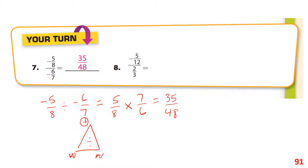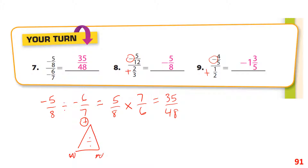For the next one, the answer is going to be negative because it's a negative divided by a positive. The result is negative 5 eighths. Then for the following problem, it's also a negative divided by a positive — that's negative. Flip the second fraction, multiply, simplify, and you get negative 1 and 3 fifths.